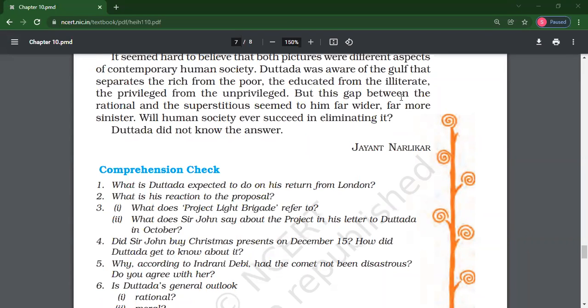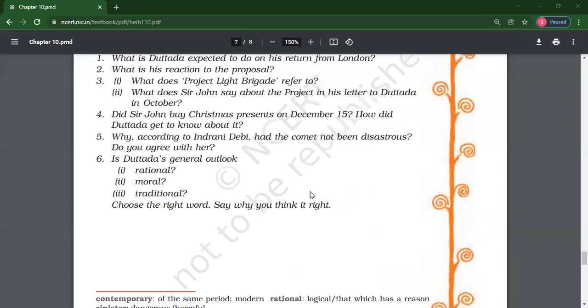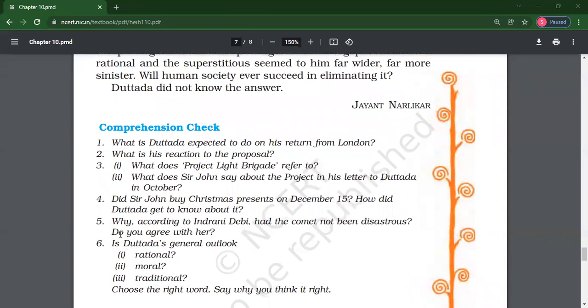Indrani Devi thought that comet Dhaka could not harm the earth because of the Yajna performed at their house. No, I don't agree. Her thought. You have to write why don't you agree. Give reason.